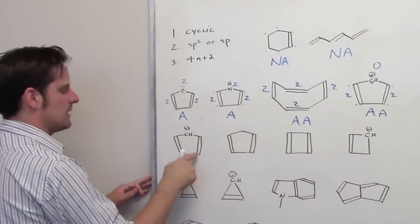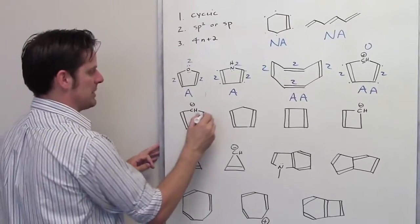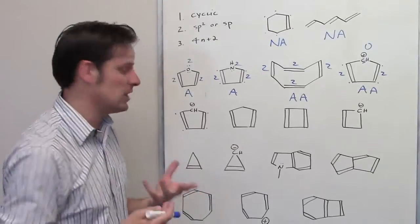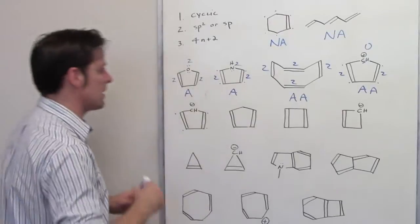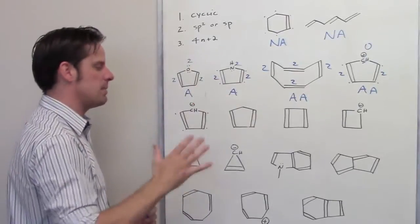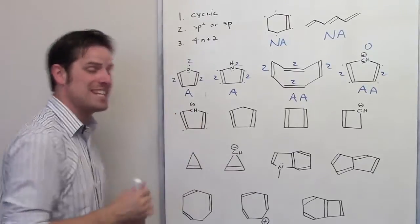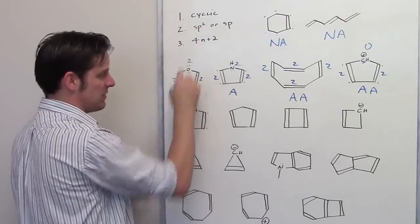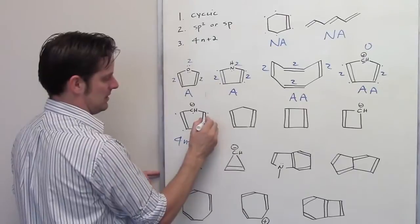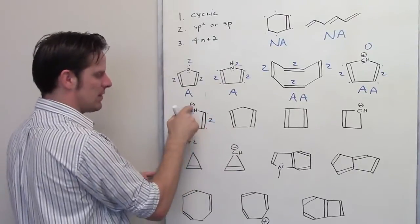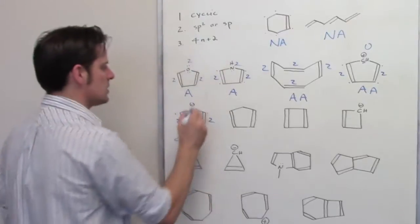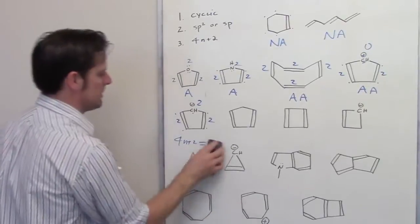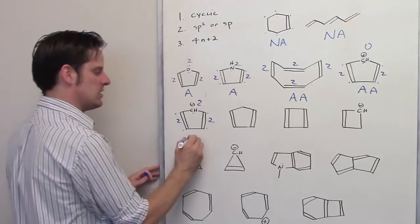Let's look at this molecule. Is it cyclic? Yes. Are all the atoms sp2 or sp hybridized? All the carbon atoms are. This carbon atom has a negative charge, which means it has a lone pair on it. Remember, atoms bearing lone pairs are flexible — this atom will re-hybridize to thrust the lone pair perpendicular to the ring, placing those two electrons into the aromatic system. It is sp2. Let's count pi electrons: 2 from this double bond, 2 from that double bond, and 2 from the lone pair — total 6. Can I solve 4n + 2 = 6? Yes. So this molecule meets all three criteria and is aromatic.